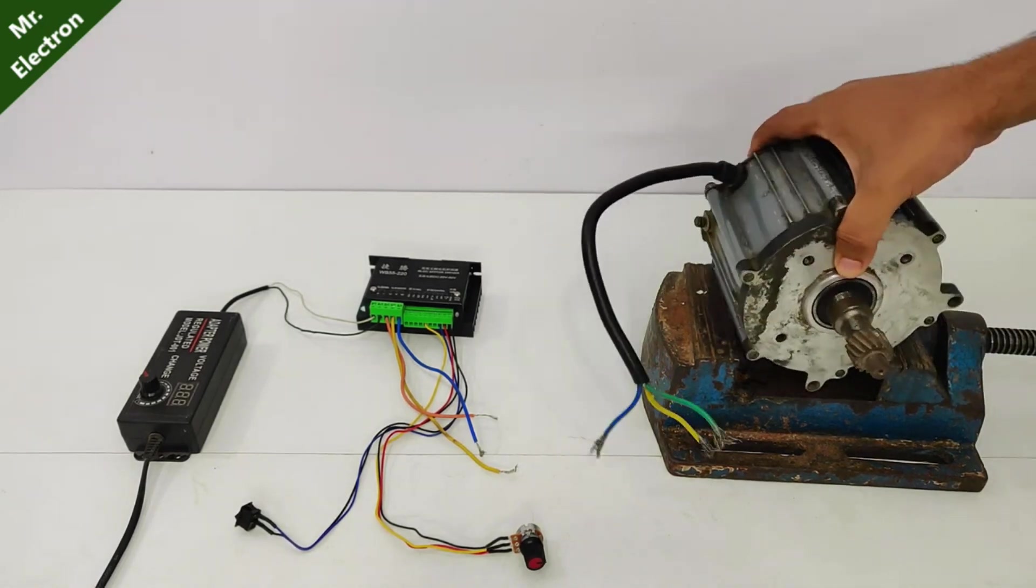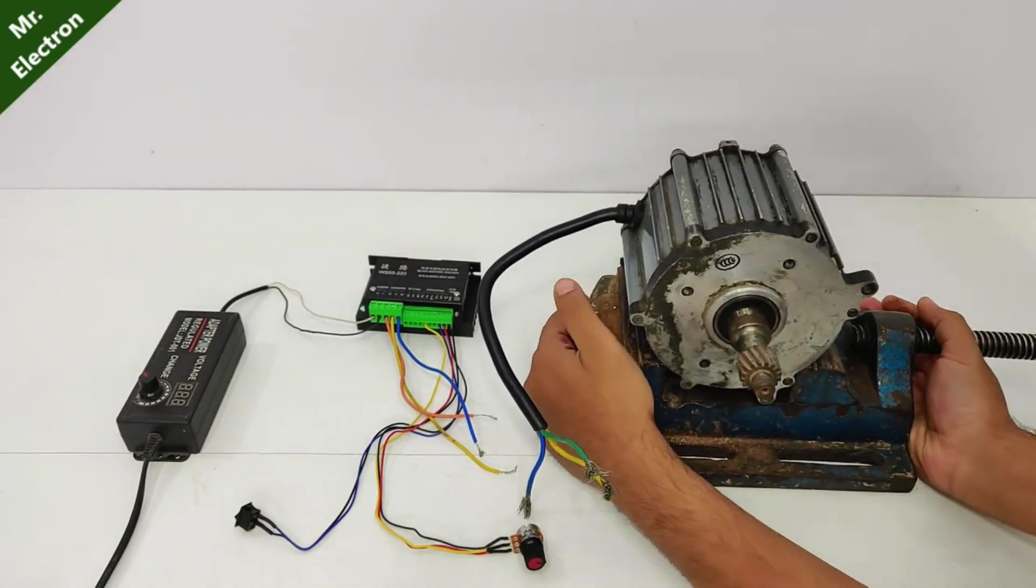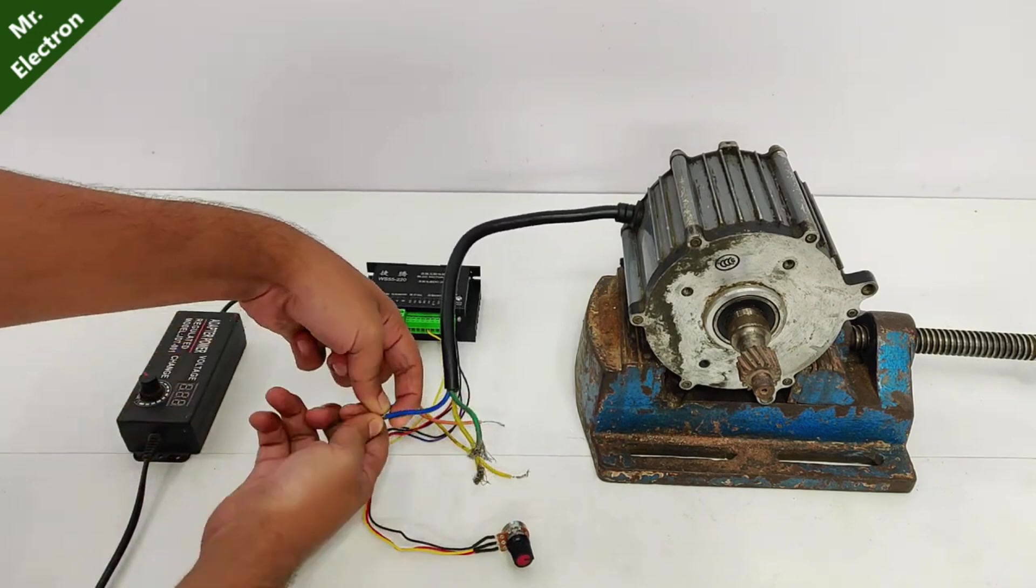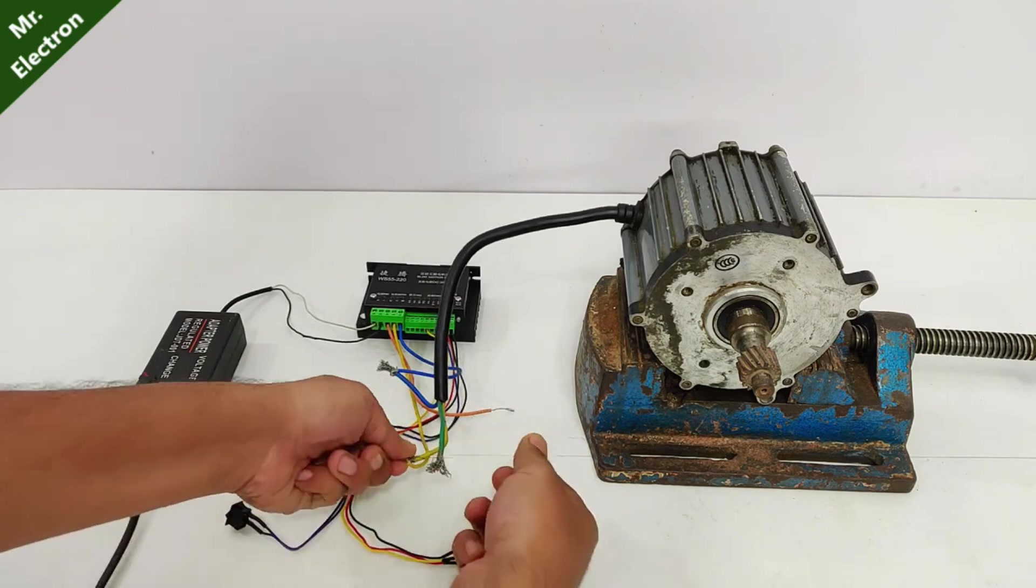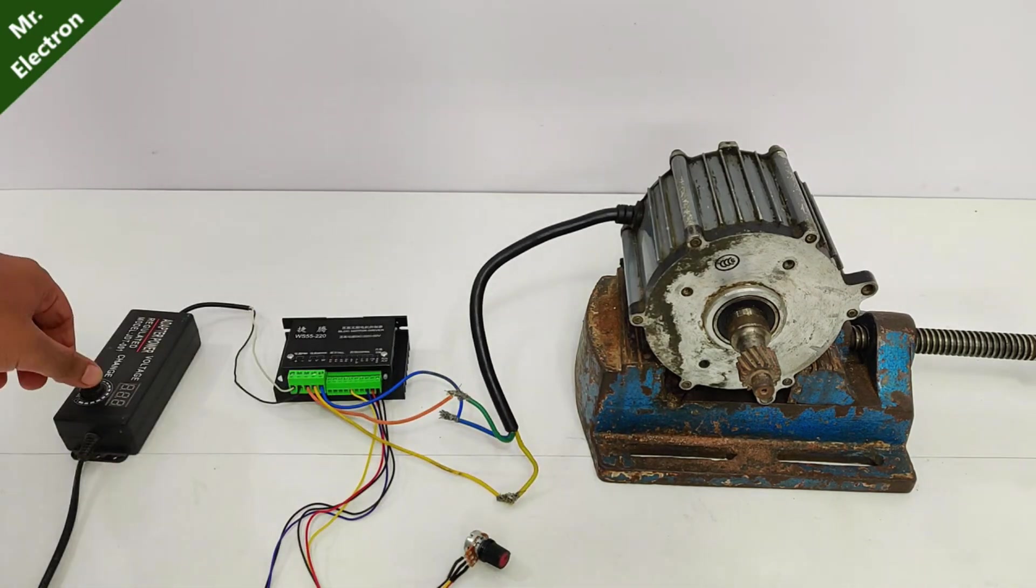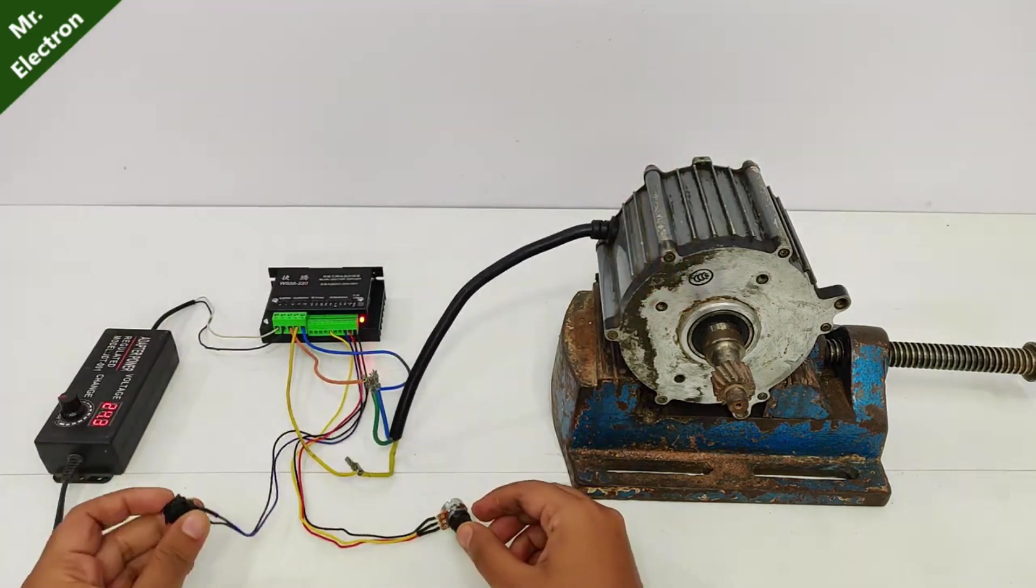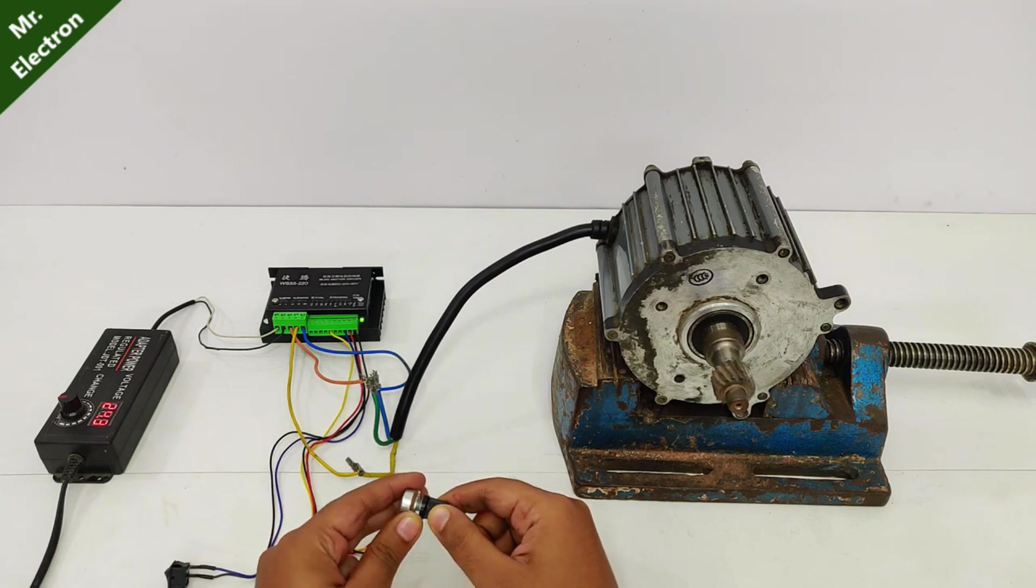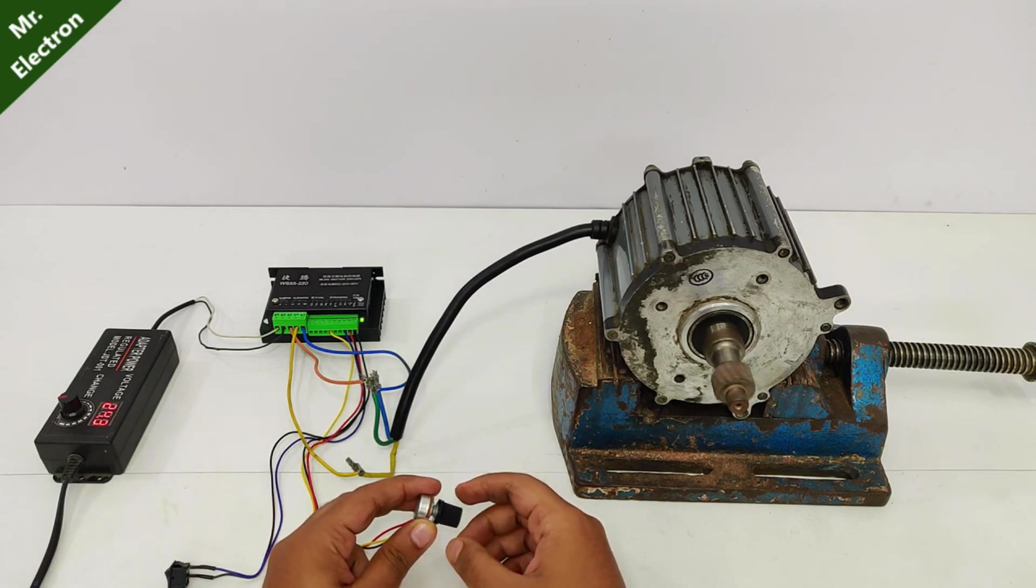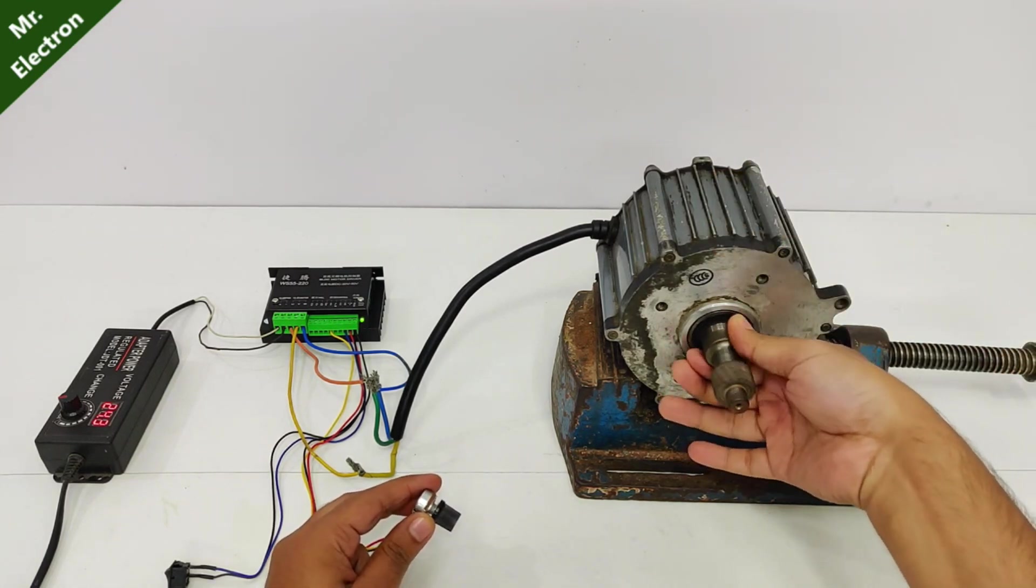Now moving on to this 24 volts 500 watts e rickshaw motor. So this is a high current one. Let's test it. So let's see if this power supply is strong enough to handle this kind of load. And same goes for the controller. That's to the minimum. Starting it. It's on. Slowly and slowly. It's running. Let's increase the speed. It's actually quite nice. Torque is also really good.